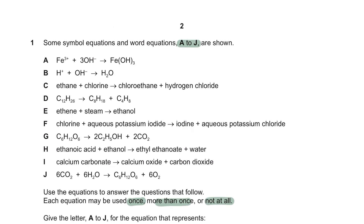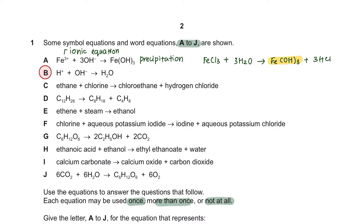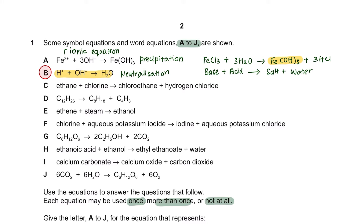Let's go through the reactions from A to J. Equation A is an ionic equation forming the precipitate of iron-3-hydroxide, so this represents precipitation. Equation B is the ionic equation of a neutralization reaction, where a base is added into acid to produce a neutral solution. Equation C shows an alkane reacting with chlorine to form a chloroalkane with hydrogen chloride — this is substitution from your organic compounds chapter, and it happens in the presence of UV light.